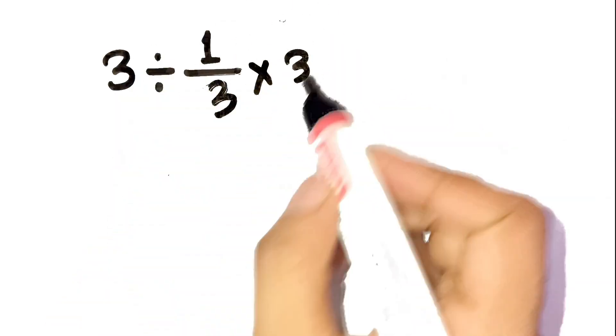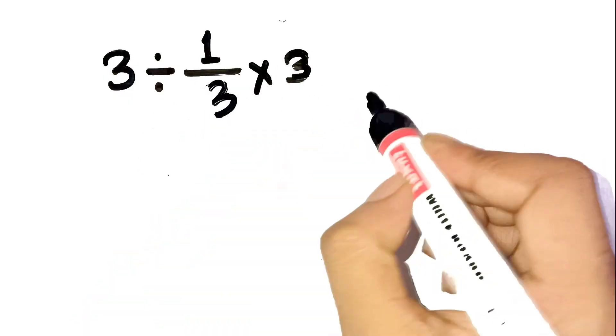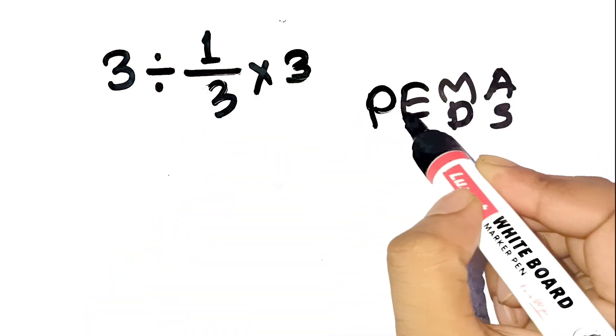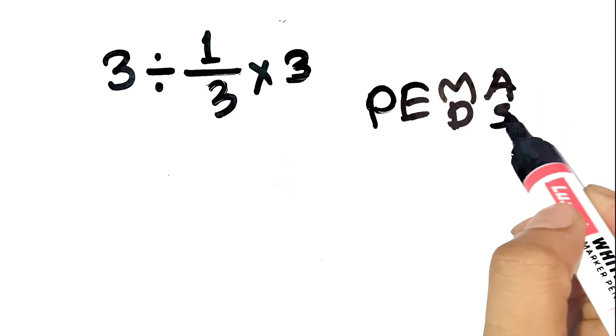Let's break it down carefully. The problem is three divided by one third times three. Now, PEMDAS tells us the order: parentheses, exponents, multiplication, division, addition, subtraction.